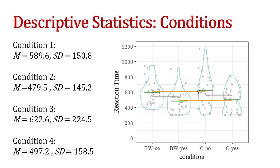The green horizontal lines represent the mean of each condition. The yellow lines represent the mean of the 'no' value of the variable match, and this other yellow line represents the mean of the 'yes' value. You can see that 'no' and 'yes' show some difference in mean. The black lines represent the values of the color variable — black and white is one black line and color is another. You can see that those means are very close to each other, suggesting that match may have an effect on reaction time, but color does not seem to.